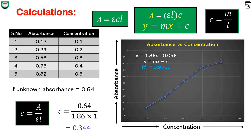Now measure the absorbance of the unknown solution the same way as for the standard solutions. Using Beer-Lambert's law — A = εCL — calculate the concentration of the unknown solution. Since we have the unknown solution's absorbance, molar absorptivity, and path length L = 1 cm, we rearrange the formula: C = A / (ε × L). Substituting values: the unknown solution's absorbance is 0.64, molar absorptivity is 1.86, and path length is 1 cm. So C = 0.64 / (1.86 × 1) = 0.344. This is the concentration of our unknown solution.